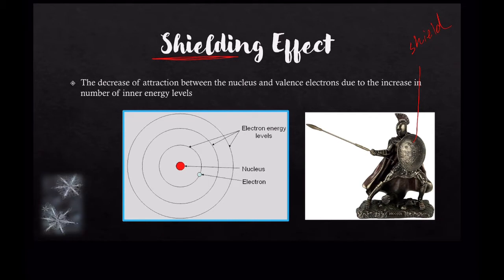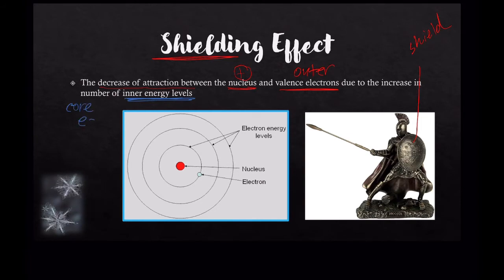When it comes to periodic trends, the shielding effect is the decrease of attraction between the positively charged nucleus and the valence electrons, also known as the outer electrons, due to the increase in the number of inner energy levels. The inner energy levels are where the core electrons are located. The core is represented by the first and second energy levels, so any electrons on those first two energy levels are considered core electrons.